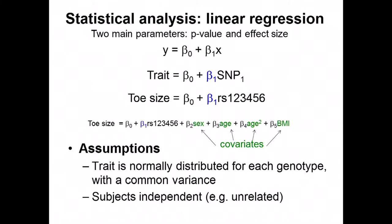In reality, there will be covariates also associated with the trait whose effects we'd like to remove, such as sex, age, and body size for toe size. We remove effects of those covariates in the linear regression to focus on what's left to explain of toe size by this variant. The assumptions in this analysis are that the trait is normally distributed for each genotype and that the subjects are unrelated from each other.